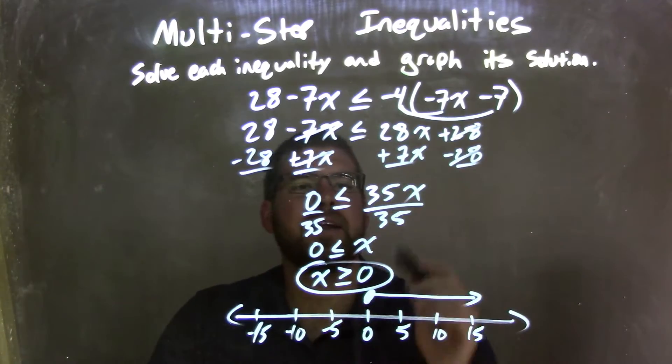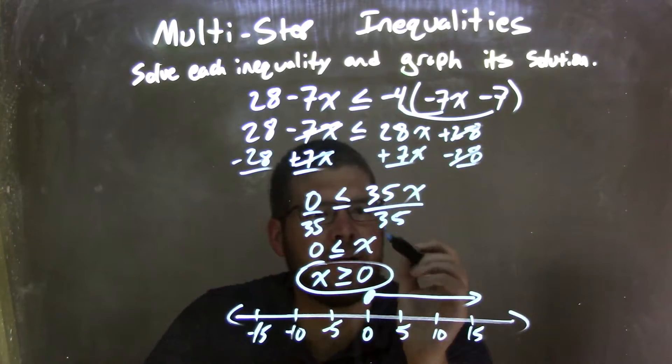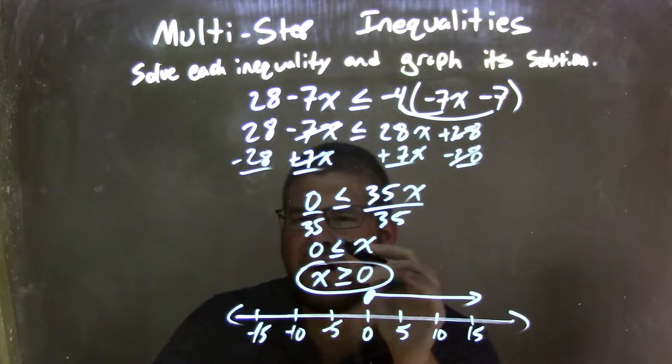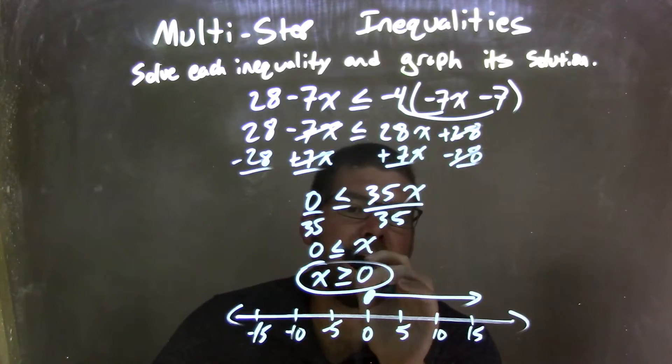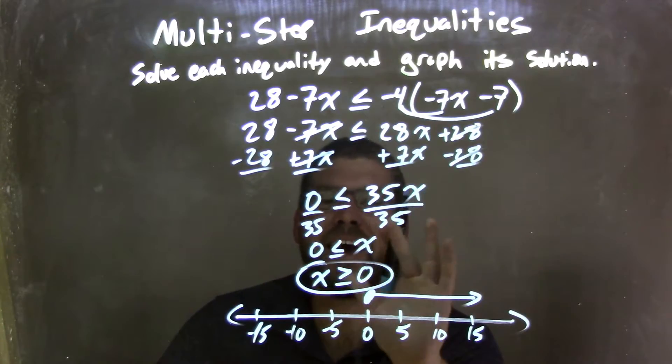So now I need to divide by 35 on both sides and get x by itself. And 0 divided by 35 is just 0. So we have 0 is less than or equal to x. Let's rearrange it, having x come first.